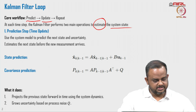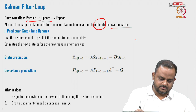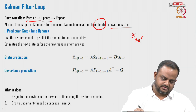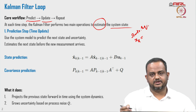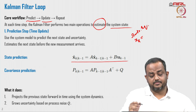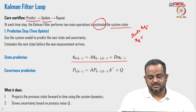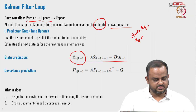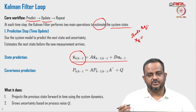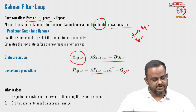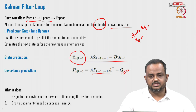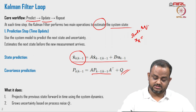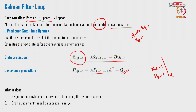The first step is called the prediction step or time update. From the state equations, the state prediction step predicts the state at the k-th time step given the values at k minus 1, that is the previous time step. It also computes the covariance prediction given the previous time steps, where Q is the process noise. This projects the previous state x(k-1) and covariance P(k-1) forward in time using the system dynamics.